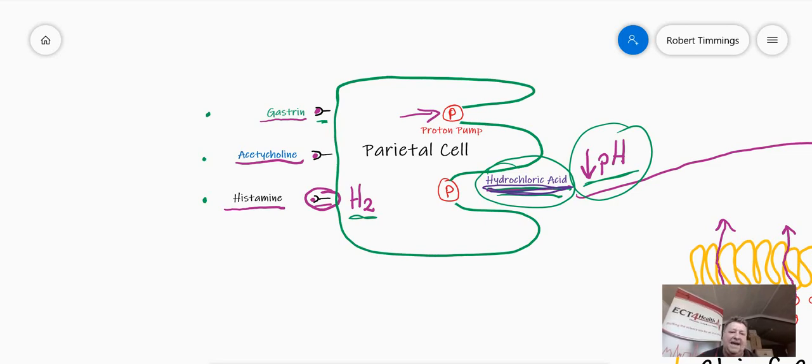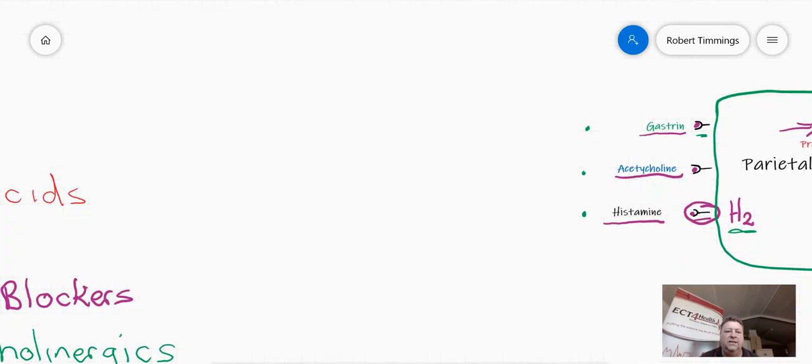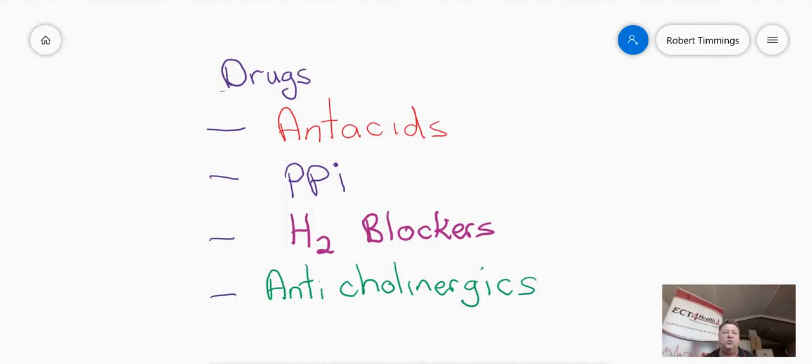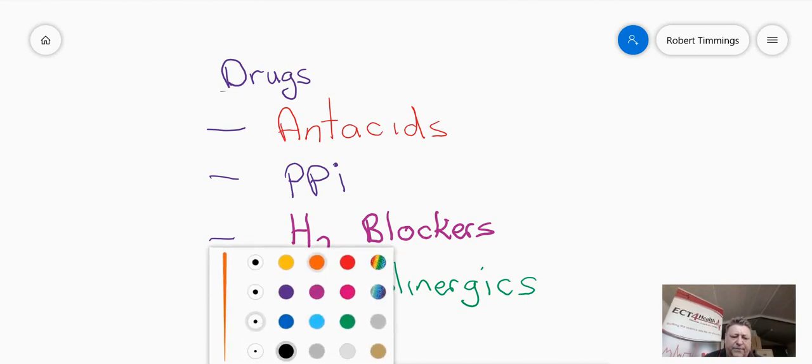So how do I combat that acid rising, causing the esophagitis and the gastroesophageal reflux disease, the GERD? Well, there's three families. Of course, I could take the acid and I could neutralize it.